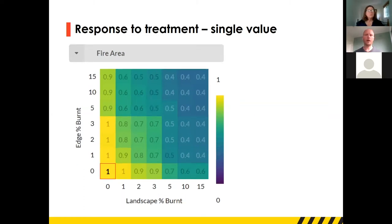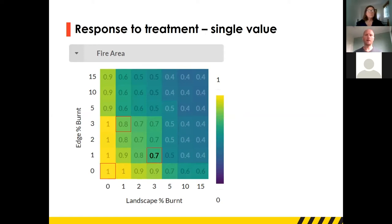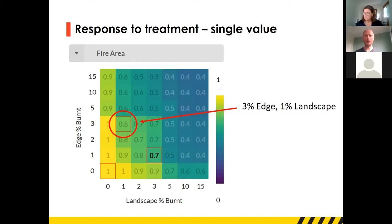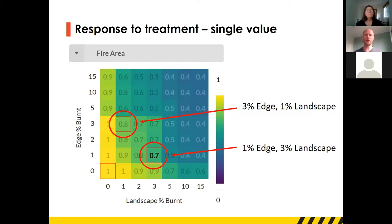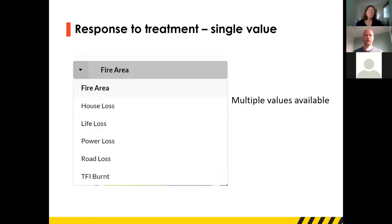The matrix gives you a snapshot of all those combinations — I think it's 49 in total — from no treatment whatsoever up to high treatments, so you can compare them. We've got our do-nothing option at zero treatment, defined as a risk level of one, and everything else is compared to that. For example, 3% at the edge and 1% at the landscape versus 1% at the edge and 3% at the landscape gives two different options. You can see there's a slightly greater decrease in risk when you do more in the landscape than the edge for this particular case study location.